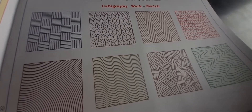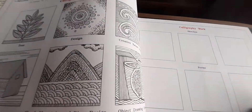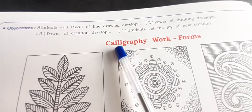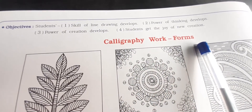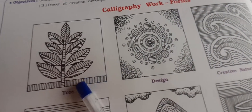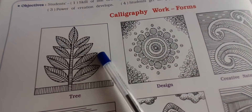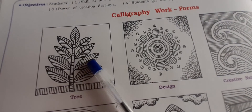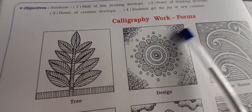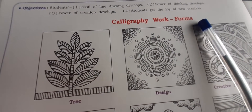Calligraphy work forms. This is a plant, this is a tree. You have leaves, you have boxes, you have sketches, you have forms.